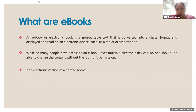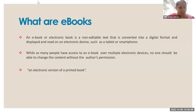Electronic books are non-editable digital content. Just like physical books where you cannot change content without the author's permission, the same applies to electronic books — the only difference is these are digital and you can read them on your electronic device. You don't need to carry a physical book; a single device can have all your books in digital format. The definition: non-editable text converted to digital format for display and reading on electronic devices.